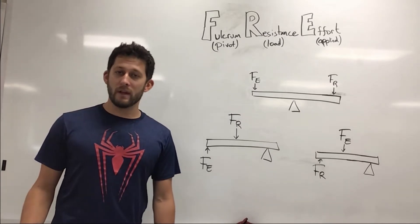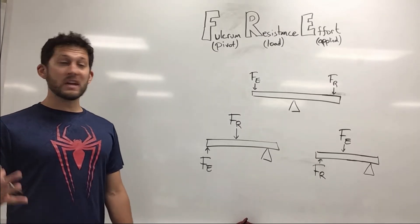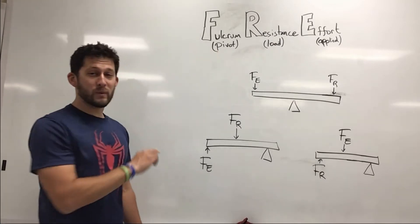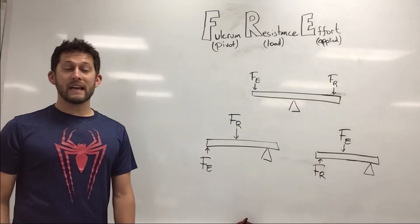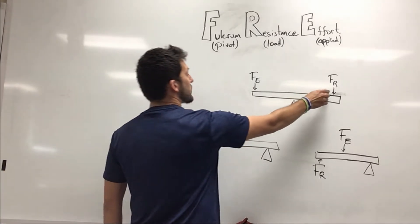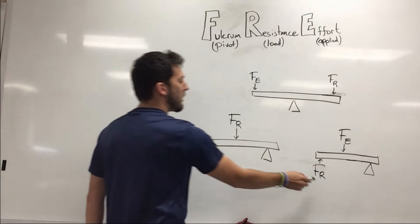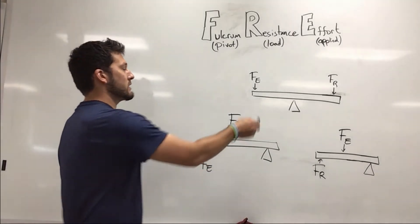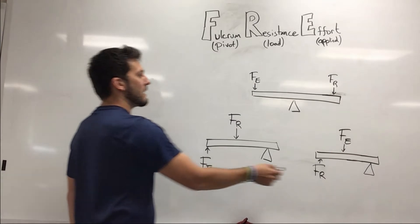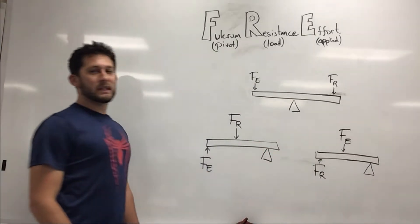So every single lever that we're going to come in contact with has three things. It's got a fulcrum, which we can also call a pivot, just like we have over here. It has a resistance force, so something we're trying to lift or something resisting our effort. And then the third thing is our effort force, so something we're pushing down, maybe sitting on, trying to pull or something like that.